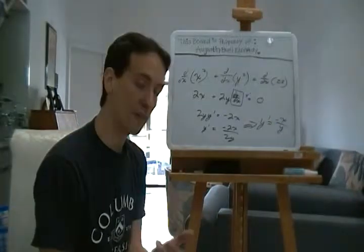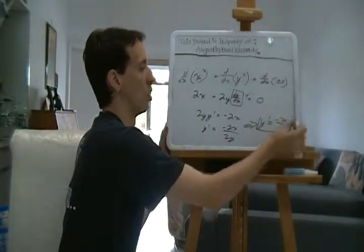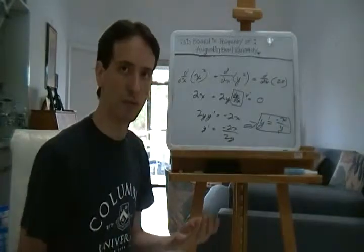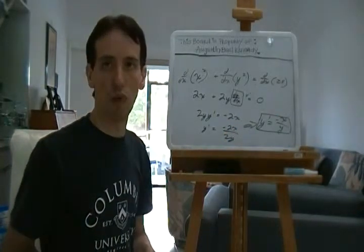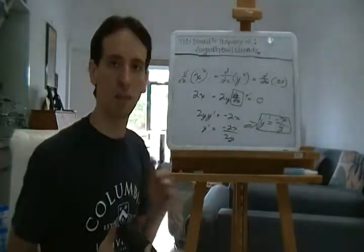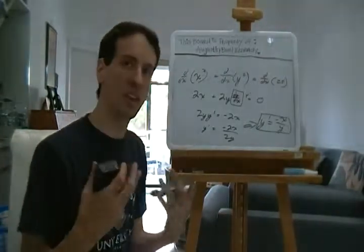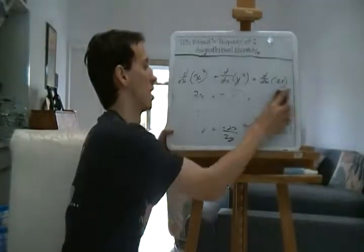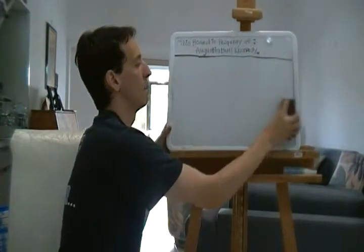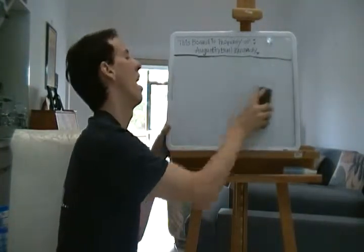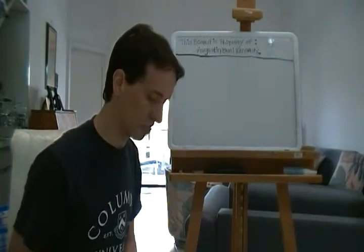So the idea behind implicit differentiation is: differentiate everything, then set up an equation and solve for y prime. The best way to teach this is to show a couple more examples. There's one I really like that involves trigonometric functions.